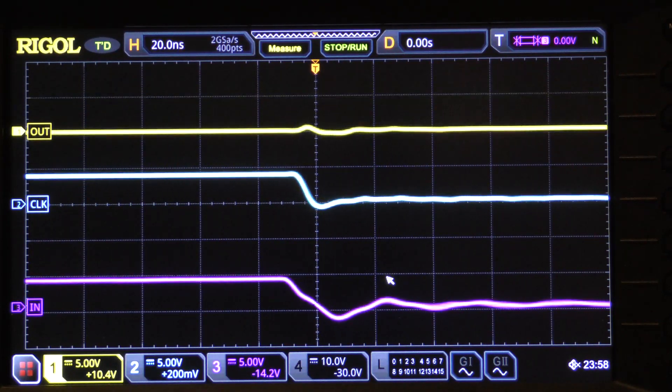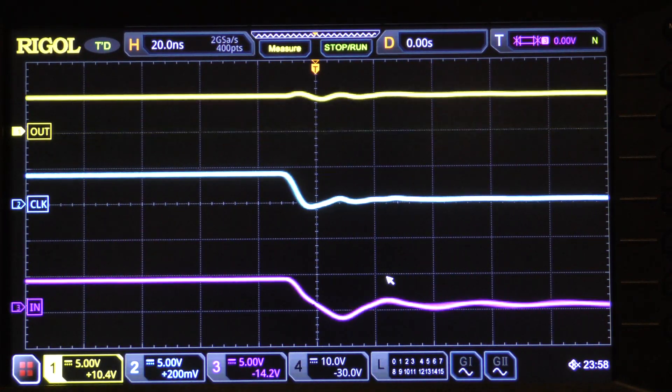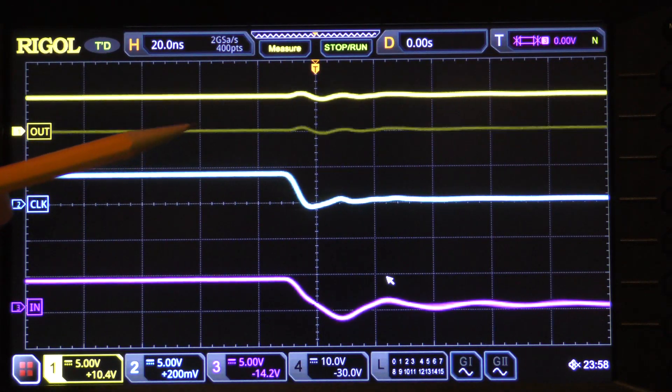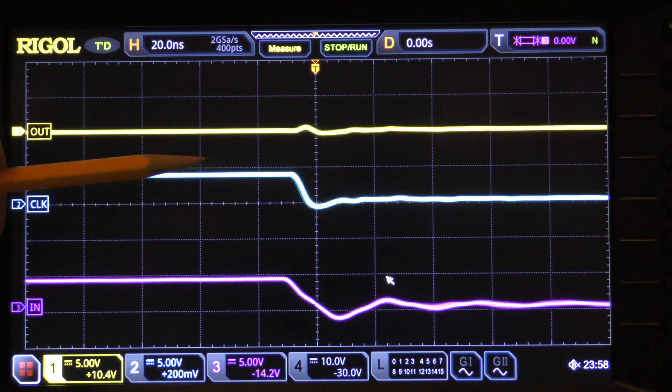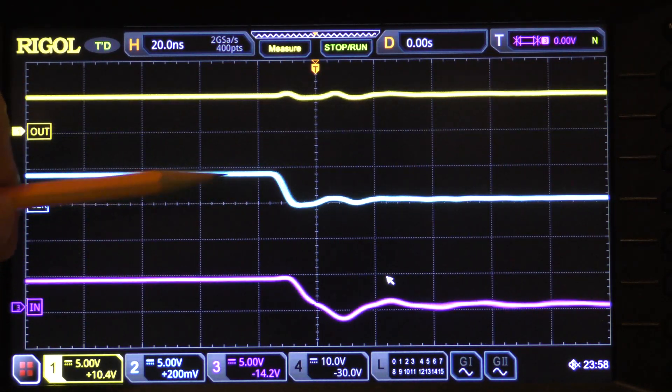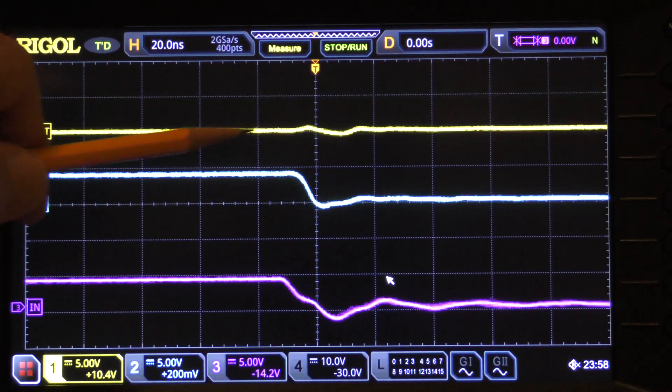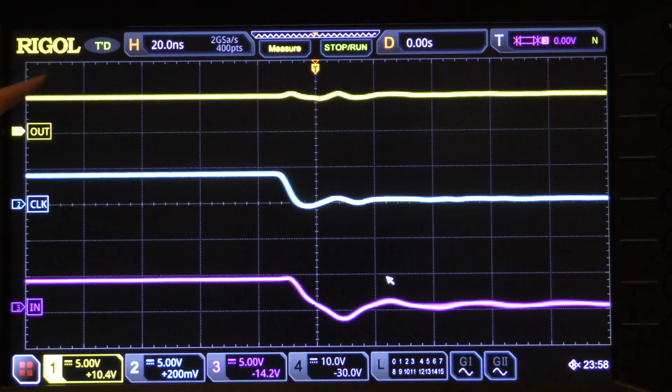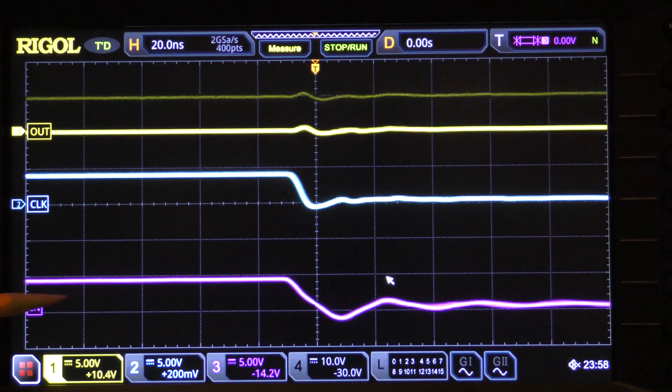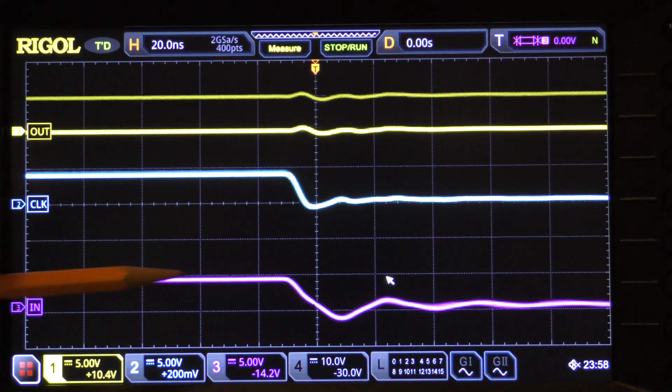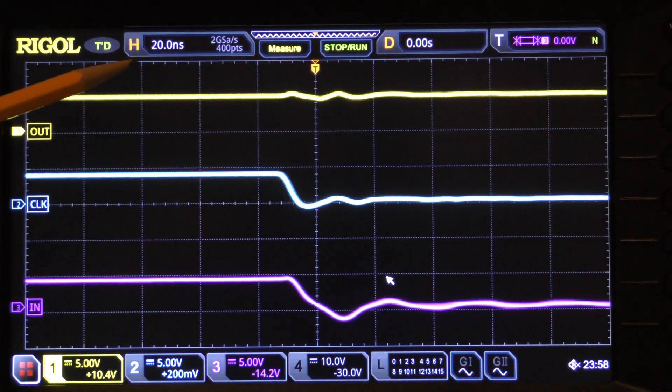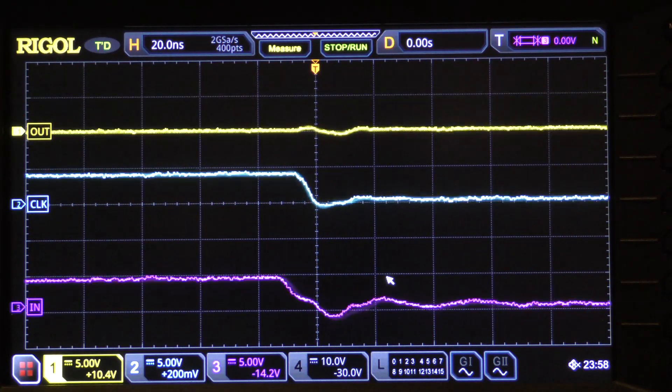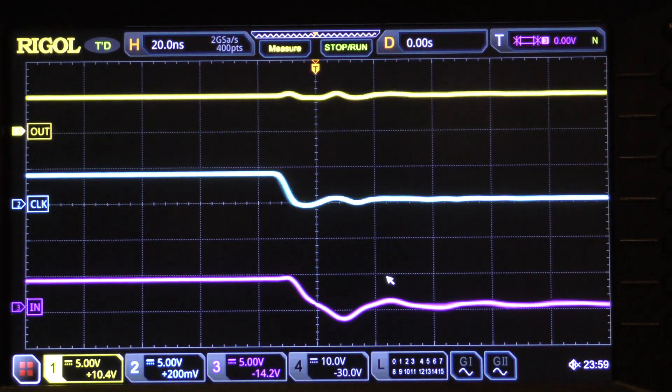I'm assuming you understand that the way a D flip-flop works is when the clock transitions, either falling or rising edge, what is on the input (the lower trace) gets latched on the output (the upper trace). But as you can see here, that's not what's happening.